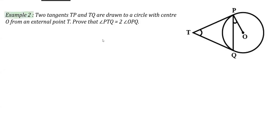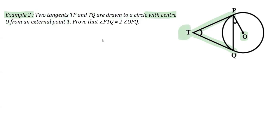This is Example 2 from the textbook. It says TP and TQ are two tangents drawn to a circle — you can see in the figure — TP and TQ are two tangents drawn from an external point T, with center O being the center. T is an external point here.